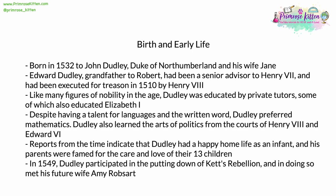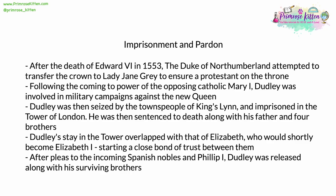In 1549, Robert Dudley participated in the violent putting down of Kett's Rebellion. In doing this, he met the woman who would become his future wife, Amy Robsart. After the death of Edward VI in 1553, the Duke of Northumberland attempted to transfer the crown to Lady Jane Grey to ensure a Protestant on the throne. However, the coming to power was done by the opposing Catholic, Mary I. Dudley was involved in military campaigns against the new Queen Mary, but in King's Lynn he was seized by the townspeople who feared the wrath of the new Queen. He was imprisoned in the Tower of London and sentenced to death, along with his father and four brothers.